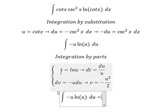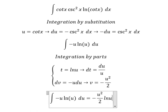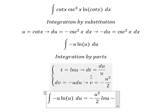Using the integration by parts formula, we have t times v minus the integral of v dt. The negatives multiply to give positive, and we can factor out 1/2.